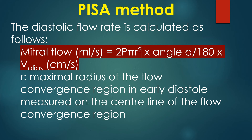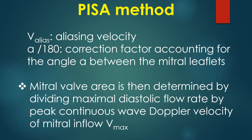The diastolic flow rate is calculated as follows: Mitral flow = 2πr² × (angle α / 180) × aliasing velocity, where r is the maximal radius of the flow convergence region in early diastole measured on the central line, V alias is the aliasing velocity, and α/180 is the correction factor accounting for the angle α between the mitral leaflets. Mitral valve area is then determined by dividing the maximal diastolic flow rate by the peak continuous wave Doppler velocity of mitral inflow, i.e., V max.